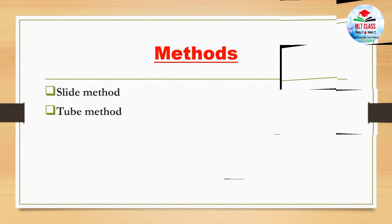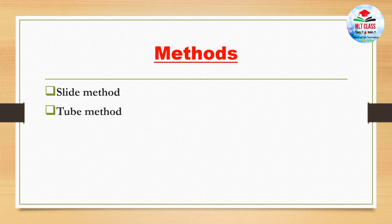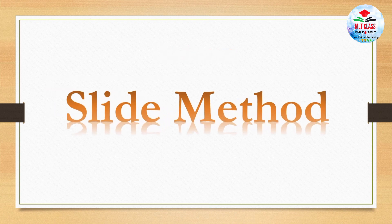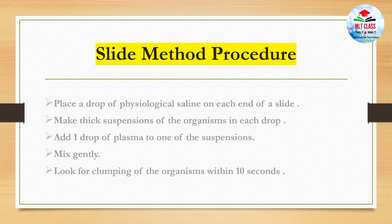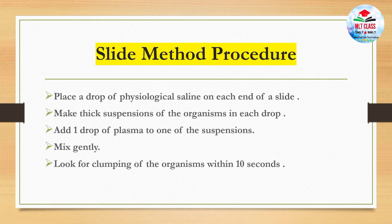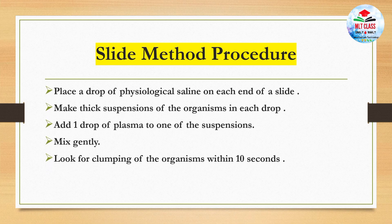There are two methods: the slide method and the tube method. For the slide method procedure, first place a drop of physiological saline on each end of a slide. Make a thick suspension of the organisms in each drop. Add one drop of plasma to one of the suspensions. Mix gently and look for clumping of the organisms within 10 seconds.